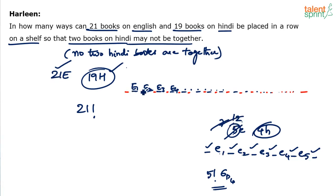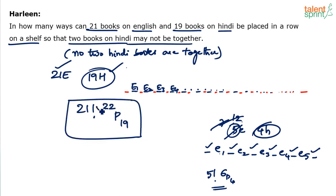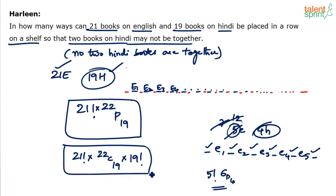So with 21 English books, there are 22 available places for Hindi books. We have to arrange 19 Hindi books in these 22 places, which can be done in 22P19 ways. So the final answer is 21! × 22P19. Equivalently, we can first choose 19 places from 22 in 22C19 ways, then arrange the 19 Hindi books in those places in 19! ways — giving 21! × 22C19 × 19!, which is the same thing. Both forms are correct.